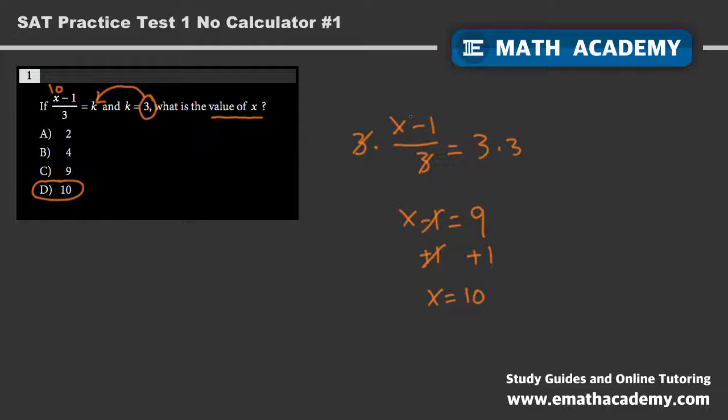If you're not sure how to do the algebra, which is a really good thing to know how to do, but if you don't know how to solve it algebraically, you could plug in these numbers. For example, trying 2 here, we've got 2 minus 1 divided by 3, and is that going to be equal to 3? That's going to be 1 divided by 3. No, that's not equal to 3. So you can try 4, 9, 10 to see what works out.